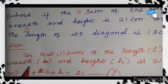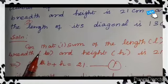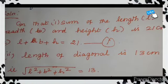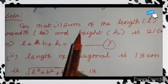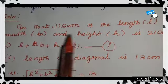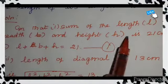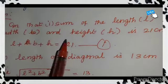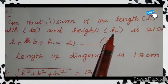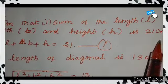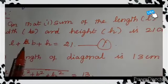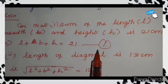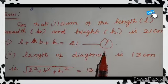First, write the given conditions. Given: the sum of the length, breadth and height — taking them as L, B and H — is 21 cm. So, L plus B plus H equal to 21. Take this as the first equation.